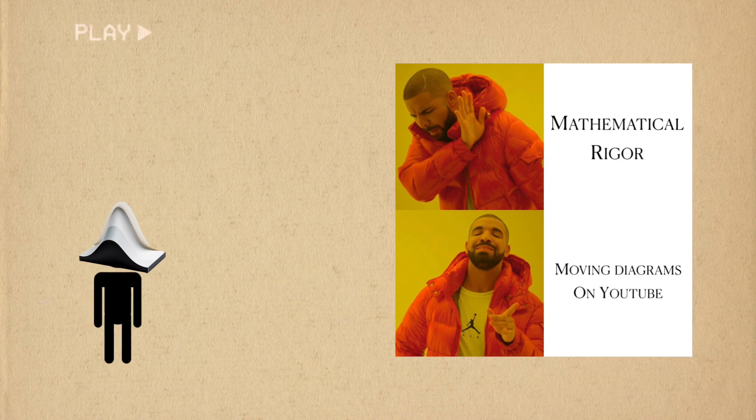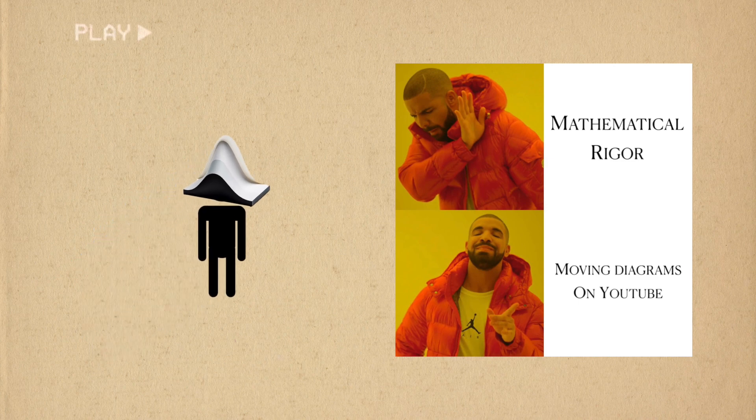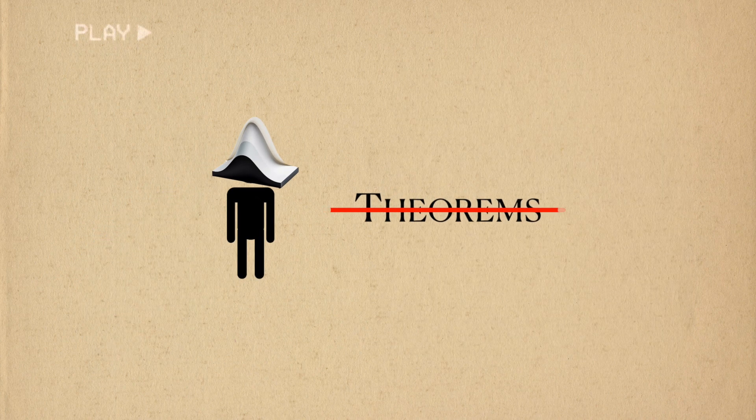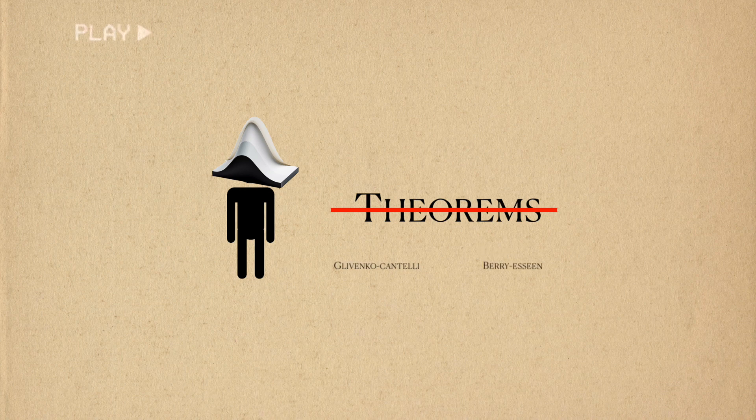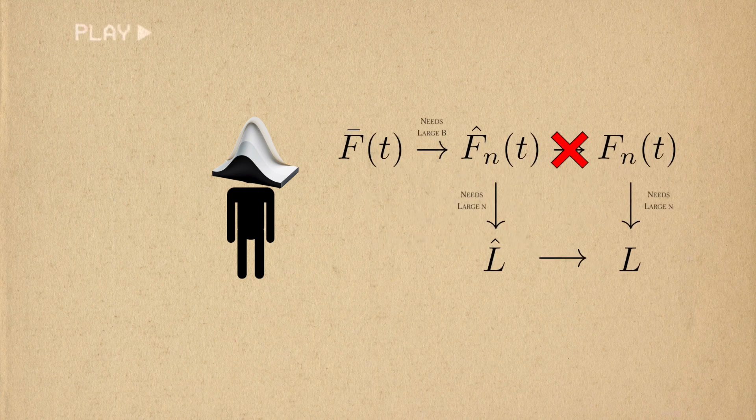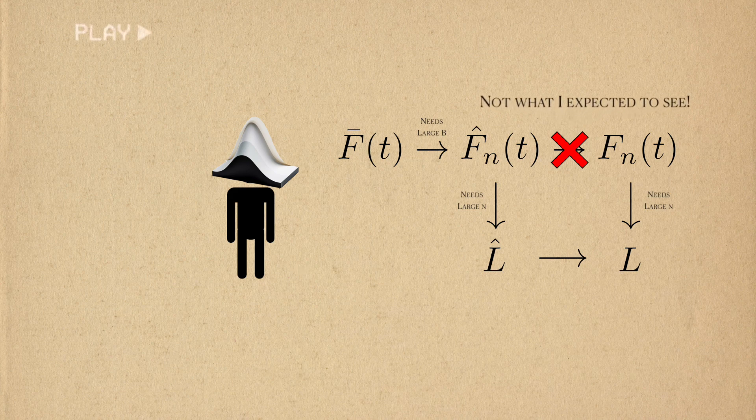There's a lot of technical detail I glazed over in this video to focus on the bigger picture. For example, I've ignored the specific theorems used to prove that uniform convergence exists between the distributions. The theorems themselves aren't important, but I wanted to convey that the path between the bootstrap estimator and the target CDF is more complicated than one might expect.